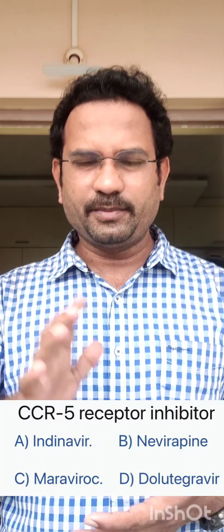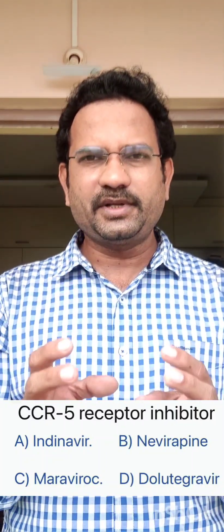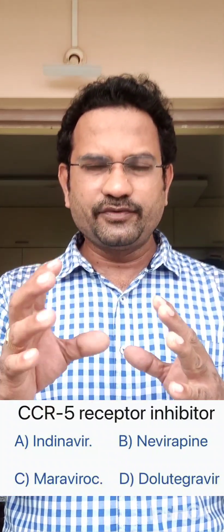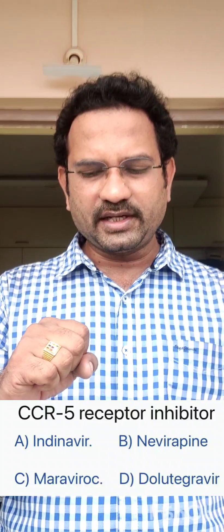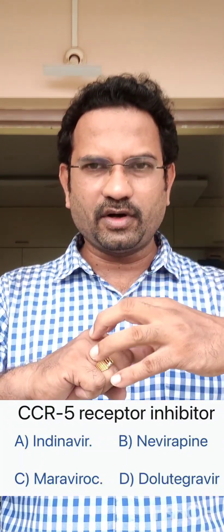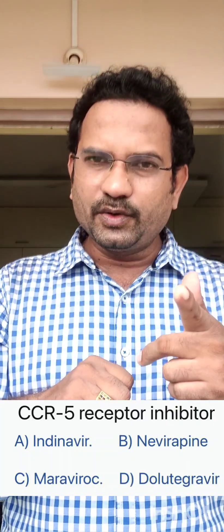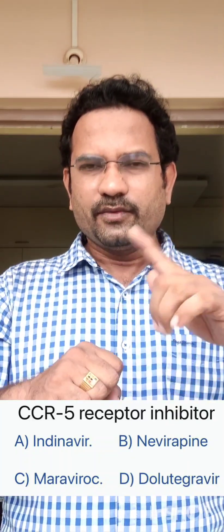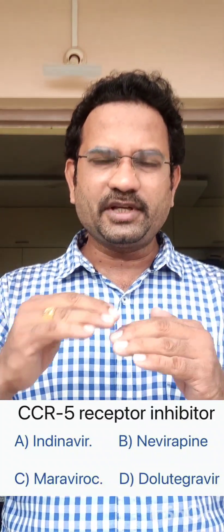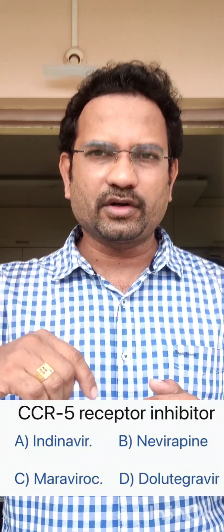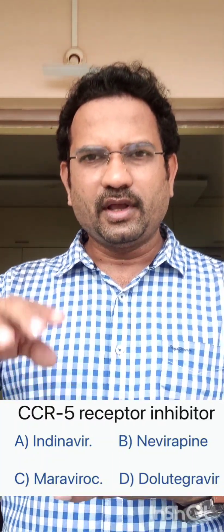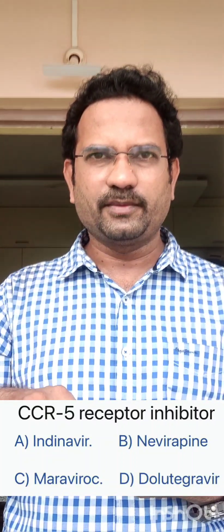Third question: CCR5 receptor inhibitor is? CCR5 receptor is known as a co-receptor. It is present on T helper cells, CD4 helper cells. The virus enters the CD4 cell with the help of two receptors: a direct receptor called the CD4 receptor, and the co-receptor CCR5. Without this co-receptor the virus cannot get inside the T cell. This receptor can be blocked by the drug maraviroc. So the CCR5 receptor inhibitor is maraviroc.